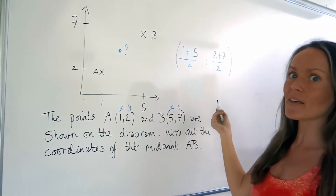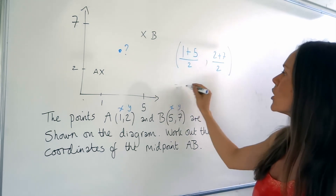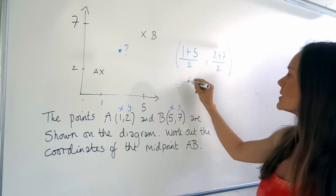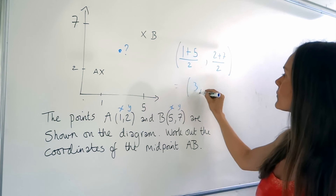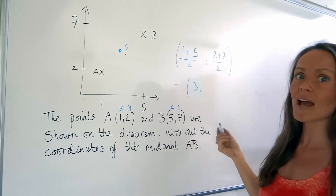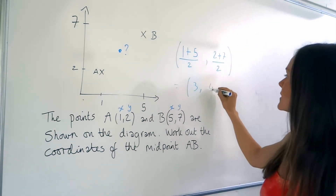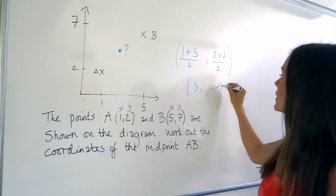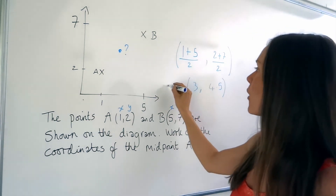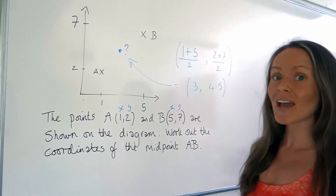So don't leave it like that — you need to evaluate this. 1 plus 5 is 6, and 6 divided by 2 is 3. And for the y's, 2 plus 7 is 9, and 9 divided by 2 is 4.5. So that's it — I've found the coordinates of the midpoint. Okay, bye.